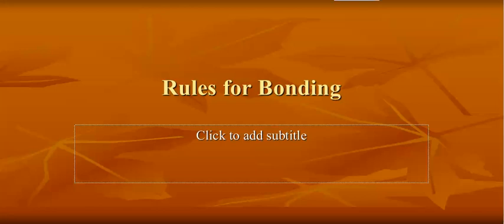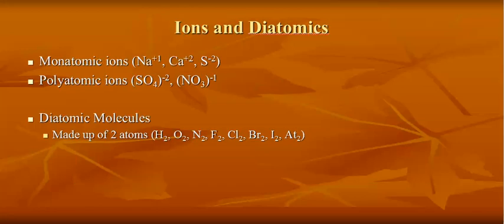Now we're going to look at how you bond elements together. There are monatomic ions, which are ions of only one atom that have a charge, and there are polyatomic ions, which are a group of atoms that take on a charge, like SO4 with a negative 2 charge, or NO3 with a negative 1 charge.